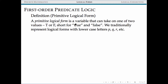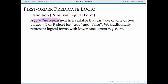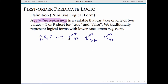As a reminder, last time in class we started talking about logical forms. Primitive logical forms are going to be our basic building blocks when we start talking about more complicated logical forms and an introduction to formal first-order predicate logic. In general, our primitive forms are really placeholders, where any given one of these could take on the value of true or false.